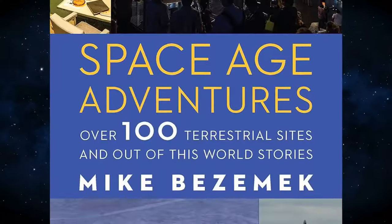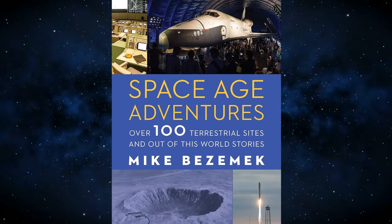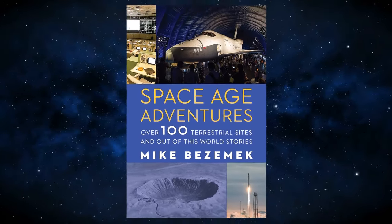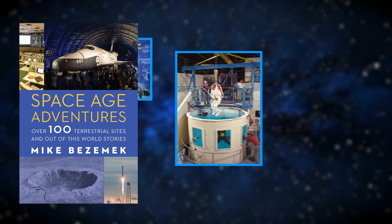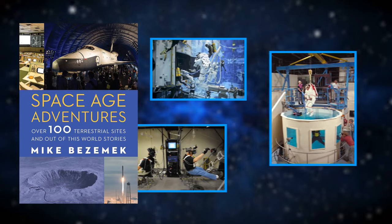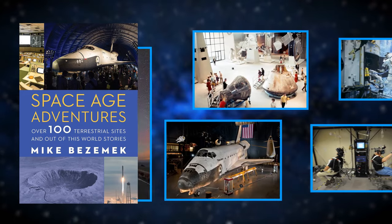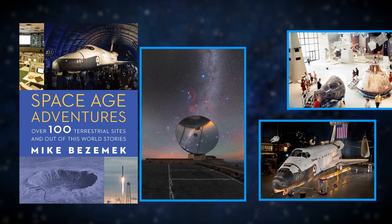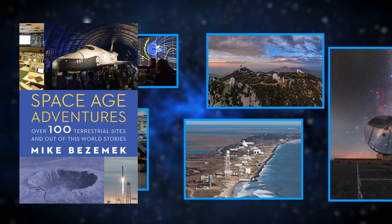You can read more about them in the book titled Space Age Adventures, Over 100 Terrestrial Sites and Out-of-This-World Stories. This list includes astronaut training facilities, captivating museums brimming with space artifacts, mountaintop observatories, bustling spaceports, and awe-inspiring NASA centers. Ignite your imagination and set you off on an interstellar journey of your own.